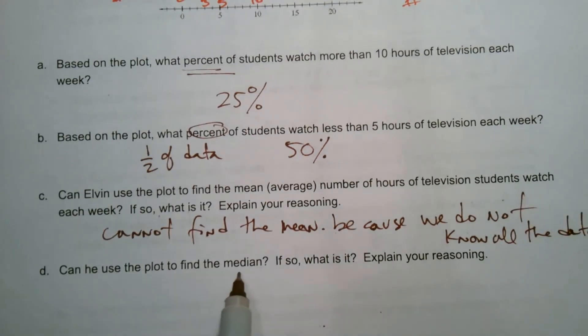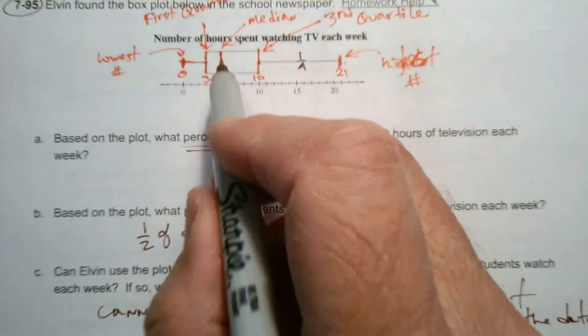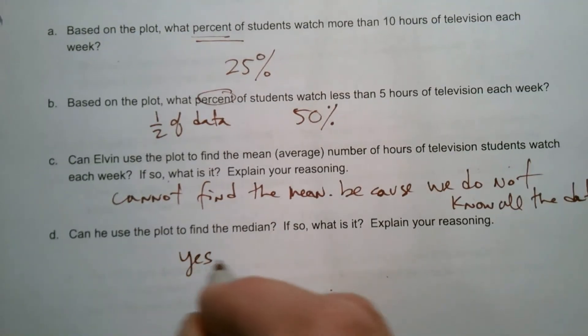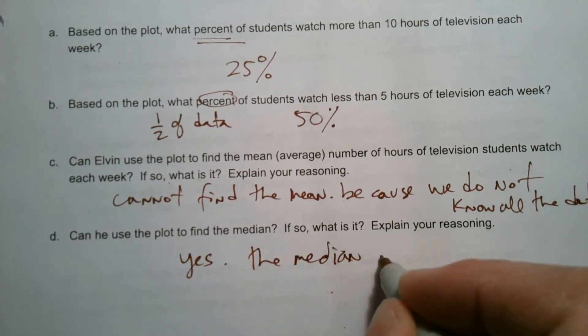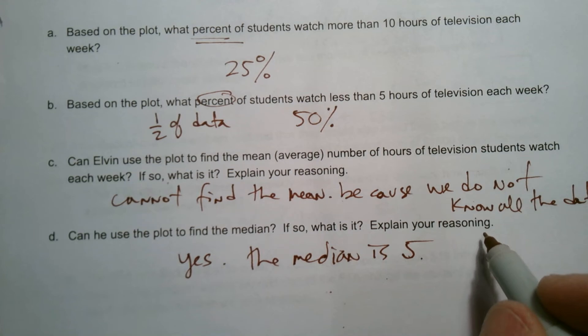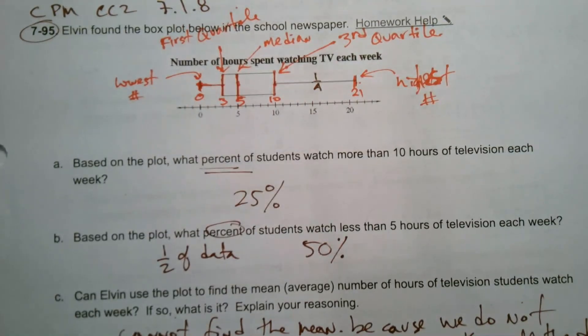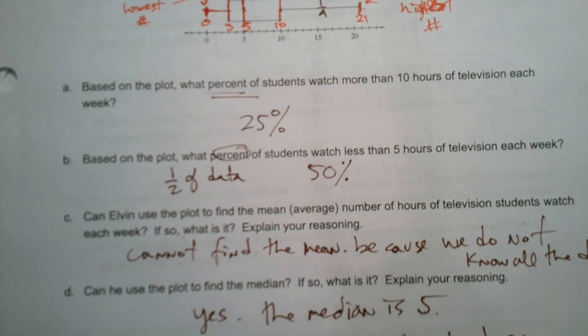So can you use the plot to find the median? Well, yes, we can. I actually showed you that, right? So the median is right here. We covered that, right? So the median is at five. So yes, the median is five, right? And how, explain your reasoning. We'd say it's the mark within the box, the mark within the box, right?